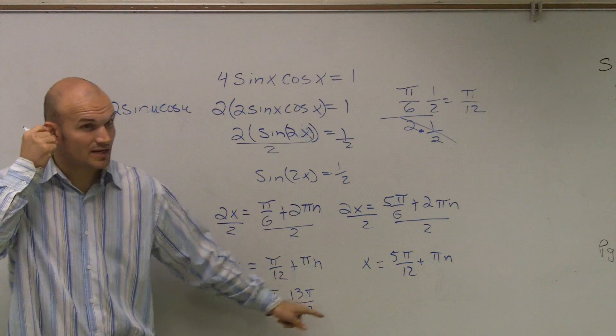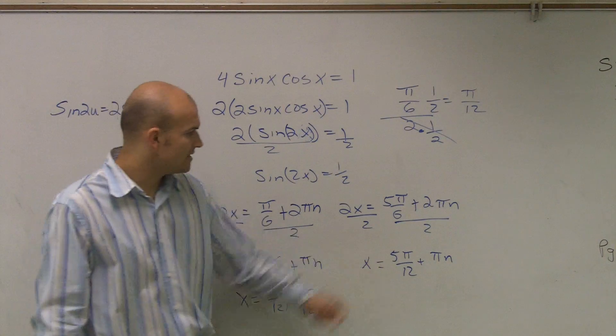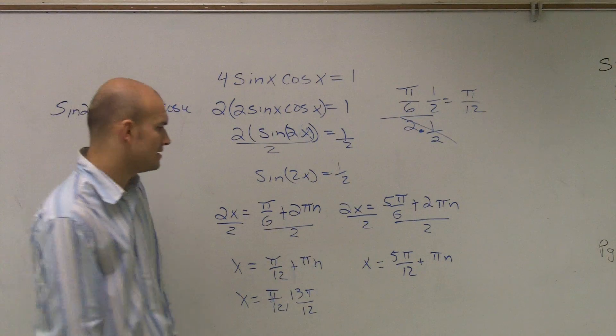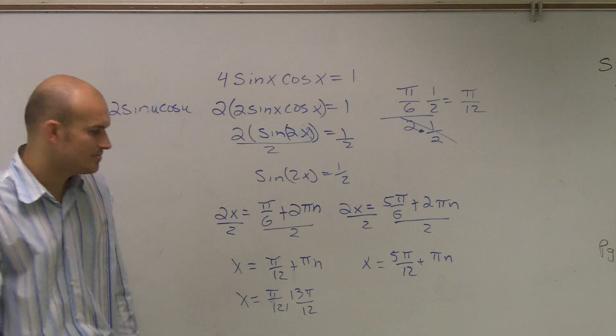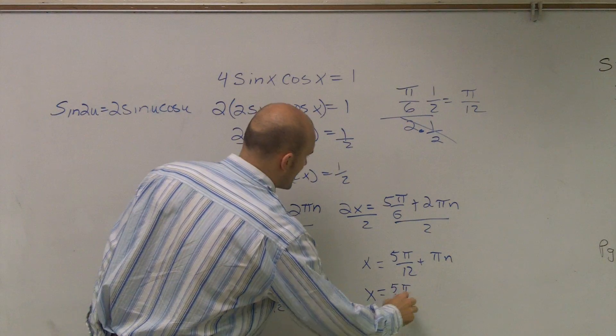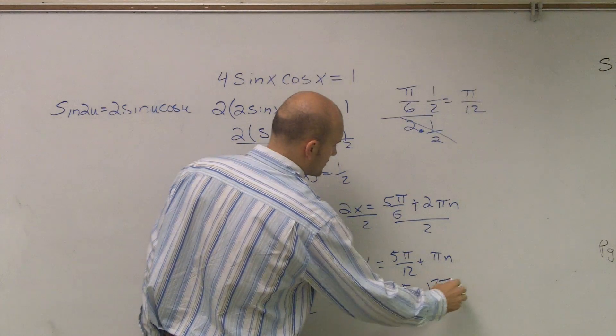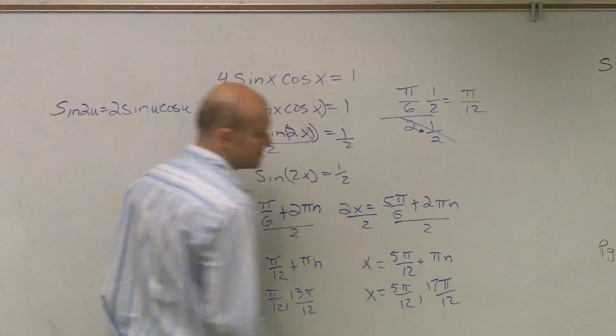Is that still within the constraint of 0 and 2 pi? Yes, both of those angles are. And then if I look over here, and I add 12 over 12, we'll get 17 pi over 12, which actually works as well. So x equals 5 pi over 12. And if I add another pi, I get 17 pi over 12.